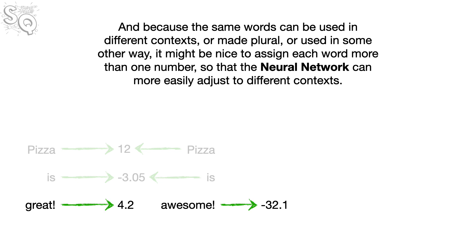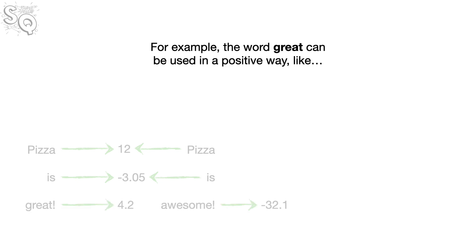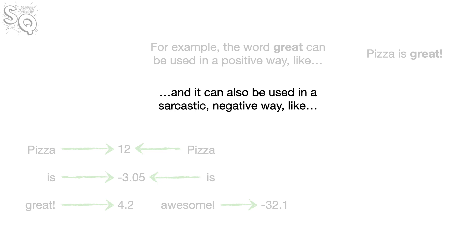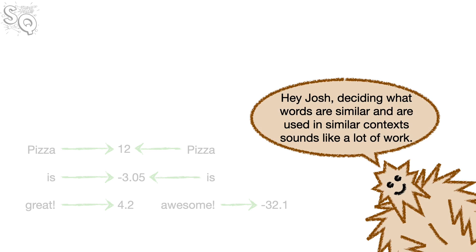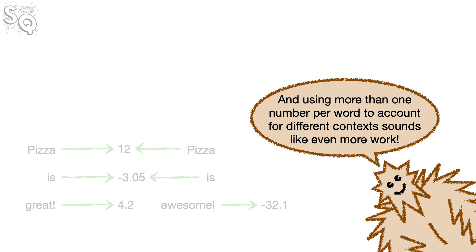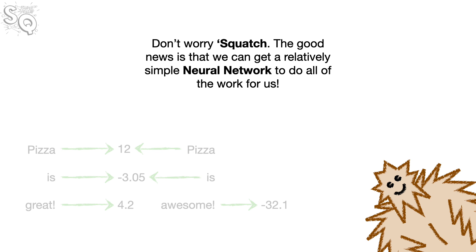Because the same words can be used in different contexts, or made plural, or used in some other way, it might be nice to assign each word more than one number so the neural network can more easily adjust to different contexts. For example, the word 'great' can be used positively — 'Pizza is great!' — or sarcastically — 'My cell phone's broken. Great!' It would be nice to have one number tracking the positive uses and a different number for the negative. The good news is that we can get a relatively simple neural network to do all of the work for us.